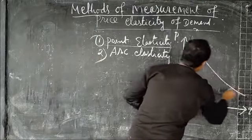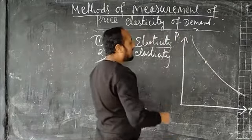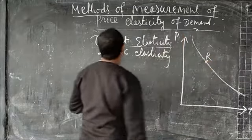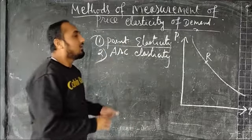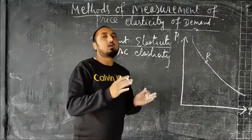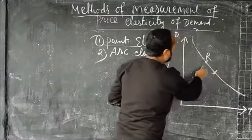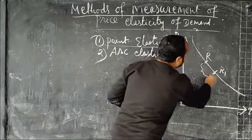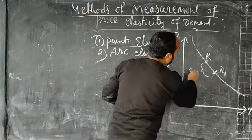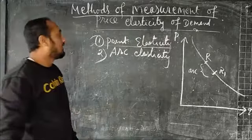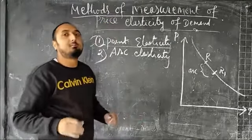This is our demand curve. On this demand curve, when we are measuring the value of elasticity at a point, this concept is called point elasticity. Next, we have arc elasticity. Arc elasticity means when we measure the elasticity of demand between a finite range or between two points — suppose we have two points R and R1 — when we measure the value of elasticity between these two ranges R and R1, this concept is called arc elasticity of demand.